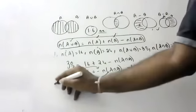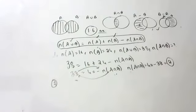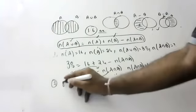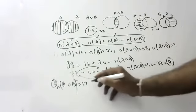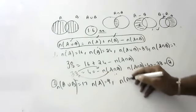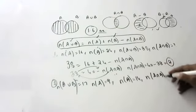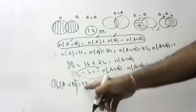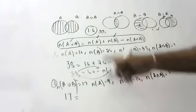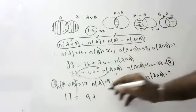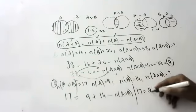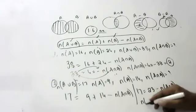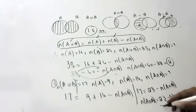One more question: A and B are two sets such that A∪B has 17 elements, A has 9 elements, and B has 14 elements. How many elements does N(A∩B) have? Same formula: 17 equals 9 plus 14 minus N(A∩B), so 17 equals 23 minus N(A∩B), giving N(A∩B) equals 6.